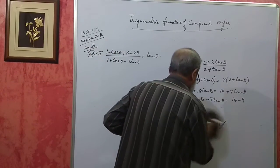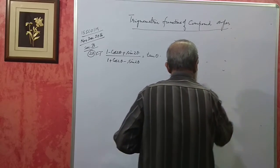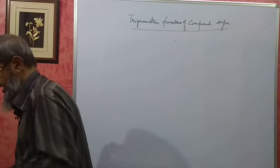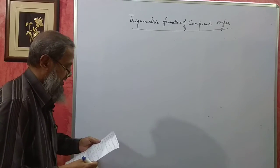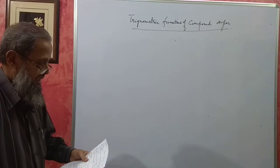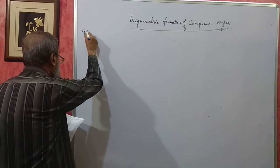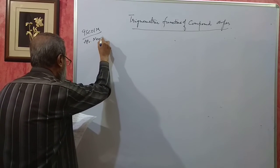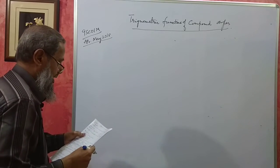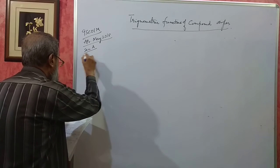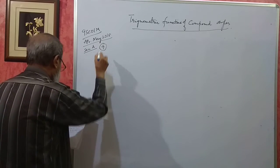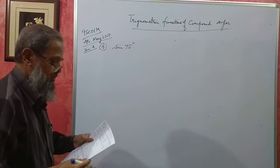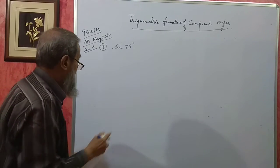Now I will take some more problems from 9SC01M. The problems remain the same whether it is the 9th paper or the 15th paper. 9SC01M, April-May 2018, section A, problem number 9: find the value of sin75° without using tables or a calculator.